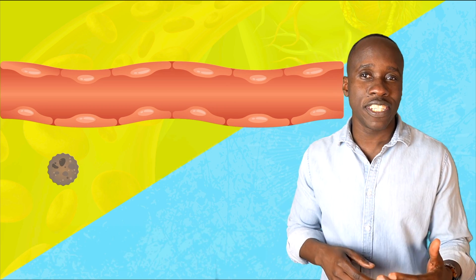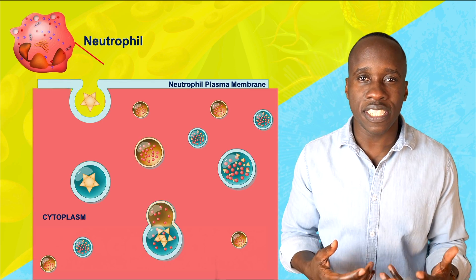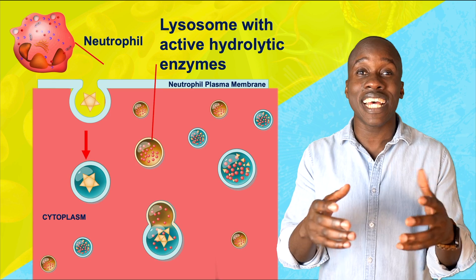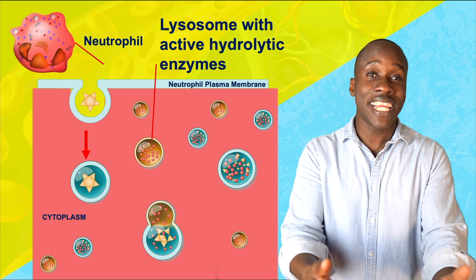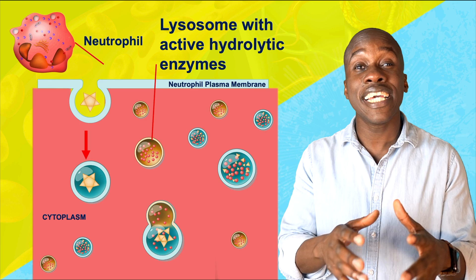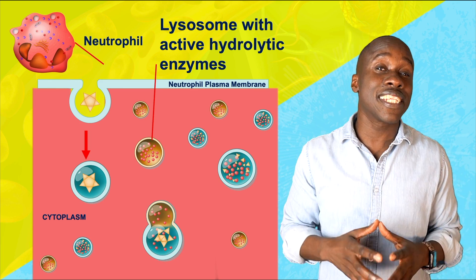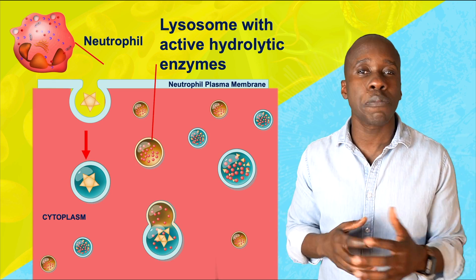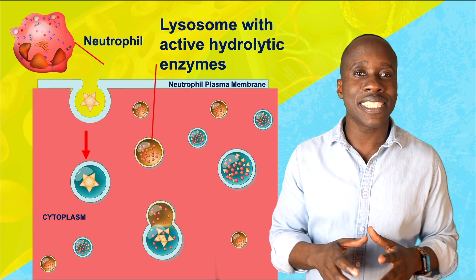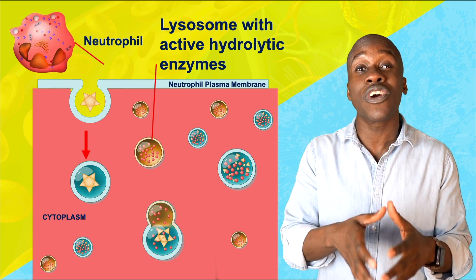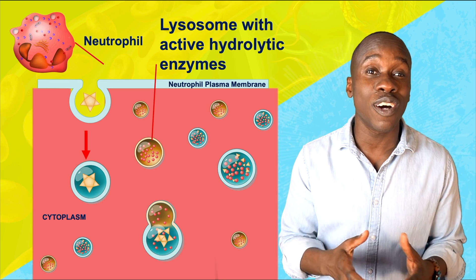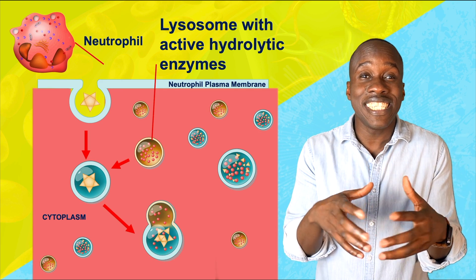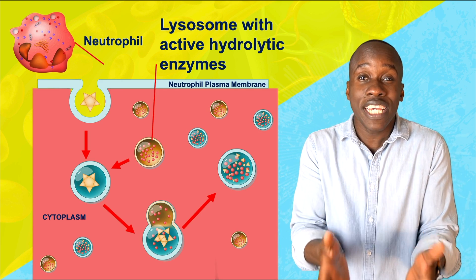Inside the granules of neutrophils, there are a number of substances. There's an enzyme called lysozyme - anytime you hear 'lyso' or 'lysis,' think of something that breaks stuff down. Hemolysis is breaking down red blood cells; in this case, lysozyme helps to break down bacterial cell walls. There are also other substances in there, like hydrogen peroxide and defensins. Basically, these substances and others in the granules all work together to help break down those foreign invaders. You'll see the granules combining with the ingested bacteria and essentially digesting them.